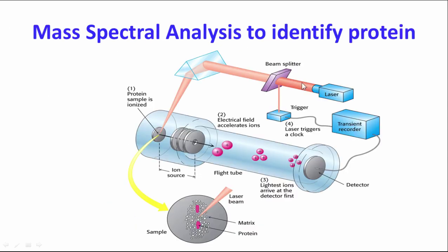Mass spectral analysis can identify proteins. Proteins can be placed on a matrix and hit with a laser beam to ionize them — a technique called MALDI. They then fly in a vacuum flight tube based on their charge-to-mass ratio: higher charge-to-mass ratio ions fly faster, so the lightest ions arrive at the detector first and heavier ones arrive later.